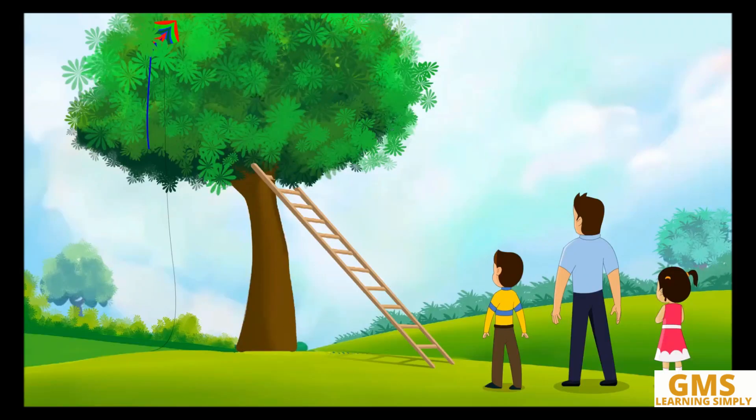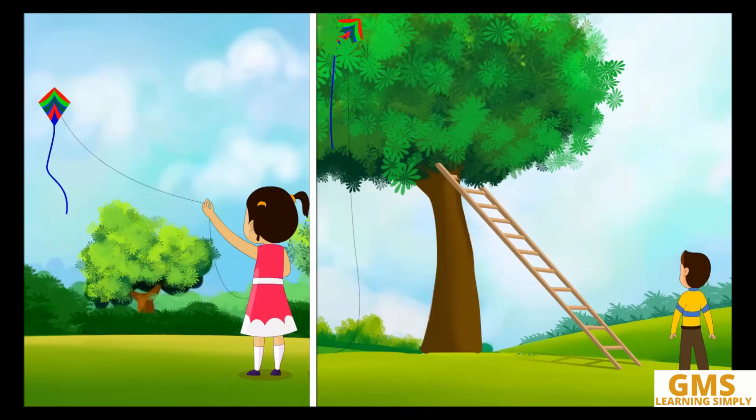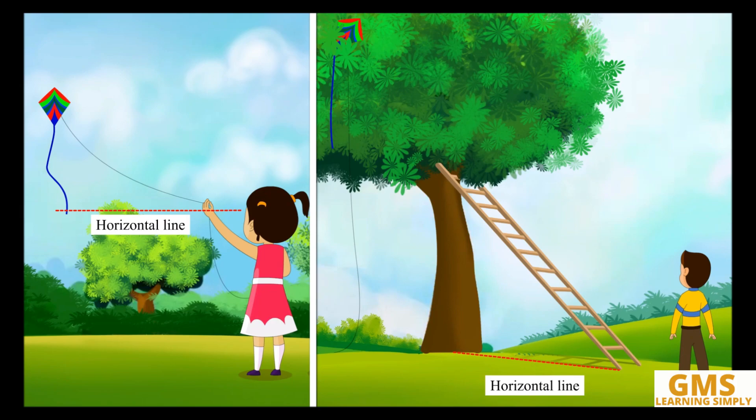Look father, the ladder forms an angle with ground. Yes Abhi, do you know any interesting fact about this angle? What interesting fact, father? An angle is formed between the horizontal line parallel to the ground and line of sight of any object. We call it the angle of elevation.